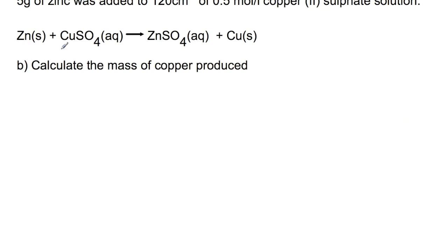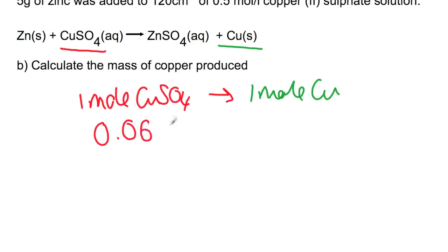So here we're going to be looking at the copper sulfate and how it links to the copper. So one mole of copper sulfate will produce one mole of copper. However, in our reaction, we know that we have 0.06 moles of copper sulfate available to react with the excess zinc, which means we should expect to produce 0.06 moles of copper.